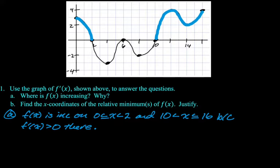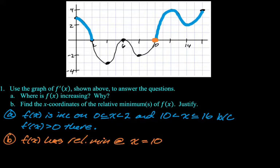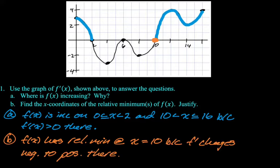Find the x coordinates of the relative minimum or minimums of f of x and justify. So we would need f prime to go from negative to positive, which only happens at 10. So I'm going to say that f of x has a relative minimum at x equals 10. And my reasoning is because f prime changes negative to positive there.